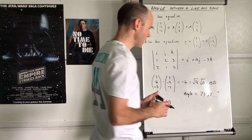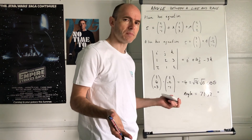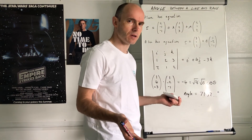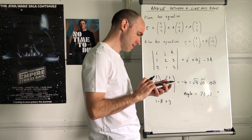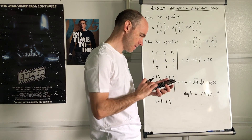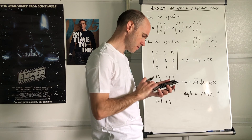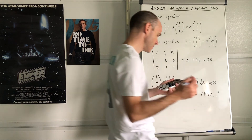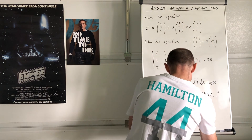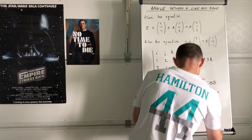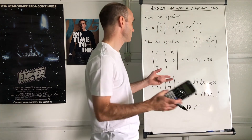Remember, 71.32° is the angle between the normal and the line. To get the angle between the plane and the line, subtract from 90°: 90° - 71.32° = 18.7°. So the angle of intersection between the line and the plane is 18.7°, to one decimal place.